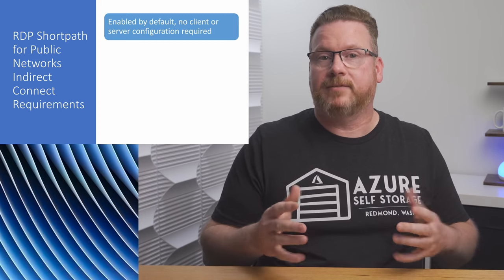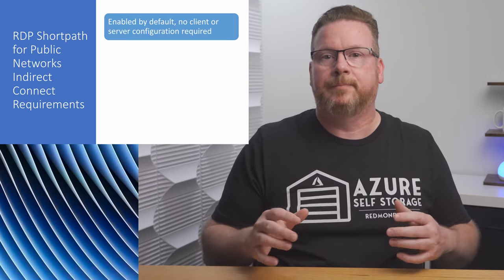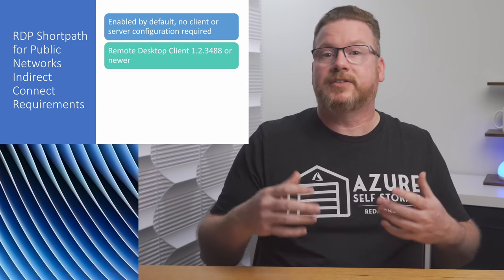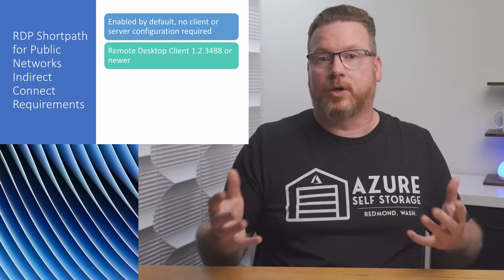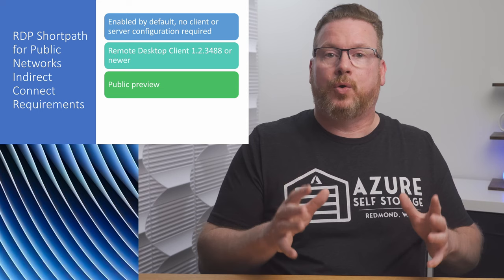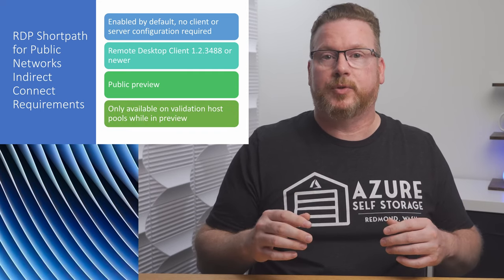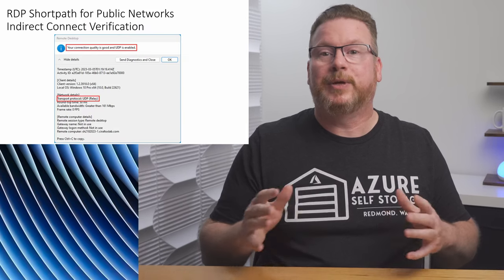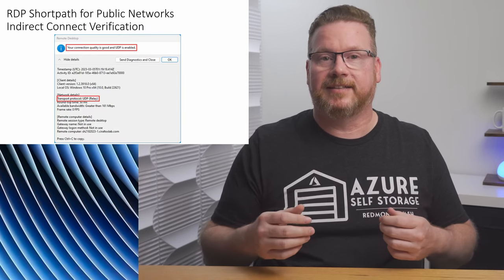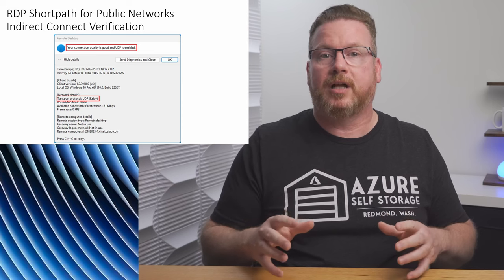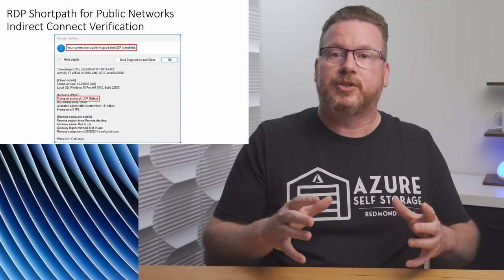Some things to know about the indirect connect method: it's enabled by default, with no client or session host configuration required. It requires the Remote Desktop client and only works with Windows. It's currently in public preview, and while in preview, it's only available on validation host pools — that requirement will change when it's generally available. You can tell it's working by the connection status on the client: it will show UDP is enabled, the transport protocol is UDP, and it will also indicate a relay.